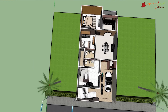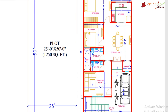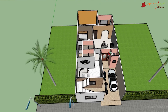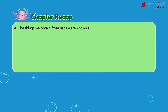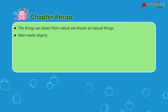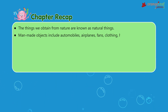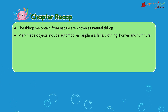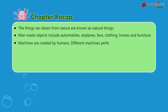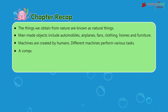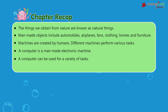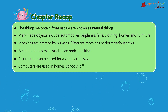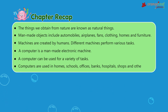Snippet: architects can utilize computers to create structures, cars, and even parks by assembling 3D forms such as spheres and cubes. Chapter recap: the things obtained from nature are known as natural things. Man-made objects include automobiles, airplanes, fans, clothing, homes, and furniture. Machines are created by humans to perform various tasks. A computer is a man-made electronic machine that can be used for a variety of tasks. Computers are used in homes, schools, offices, banks, hospitals, shops, and other places.